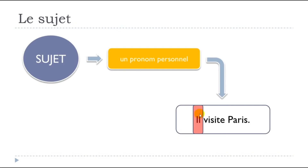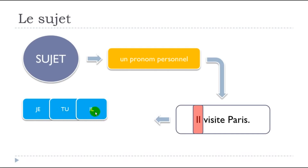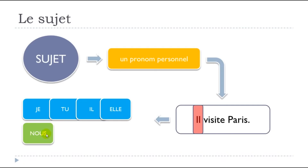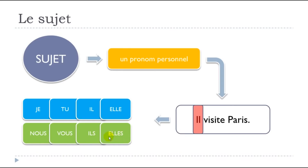In English it's clearer because they're called subject pronouns, so there's no doubt about the function. The pronouns are: je (I), tu (you), il (he), elle (she) — those are singular. For the plural: nous (we), vous (you) — used for plural and also for the polite form when meeting someone for the first time. Then ils (they, masculine) and elles (they, feminine). In French, we make the distinction between masculine and feminine forms for les pronoms personnels in the plural.